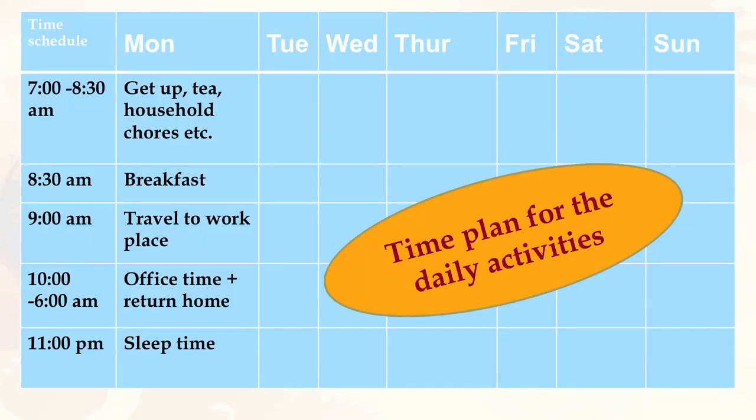Now we will talk about the time plan for daily activities. You can make your own chart yourself as per your requirement and your activities. In this chart you can see the days on top — Monday, Tuesday, Wednesday, Thursday, Friday, Saturday, Sunday — and the time of different activities. For example, a person gets up at 7 AM, then goes for other activities; by 8 AM the person is ready; by 9 he or she takes breakfast; by 10 reaches the office; and by 11 there is work time.